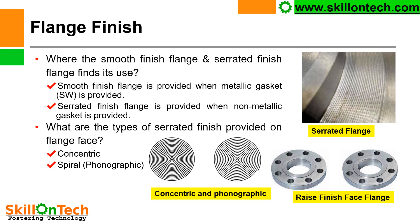Regarding flange finish — where smooth finish and serrated finish flanges find their use: smooth finish flange is provided when metallic gaskets or spiral wound gaskets are used. Serrated finish flange is provided when non-metallic gaskets are used. Therefore, in serrated finish flanges we can use rubber gaskets, asbestos or graphite gaskets. Spiral wound gaskets cannot be used in serrated finish flanges, otherwise the flange joint will leak. When spiral wound gaskets are required, that calls for a smooth finish flange.